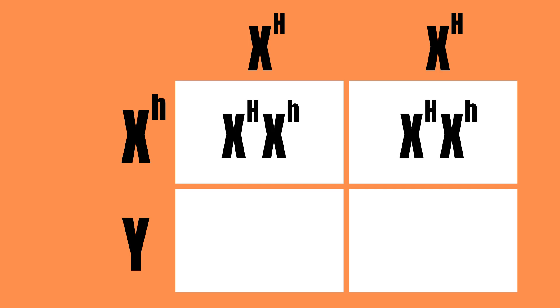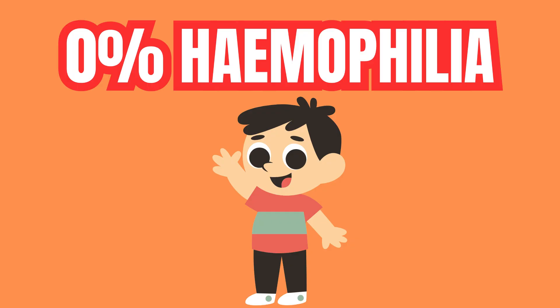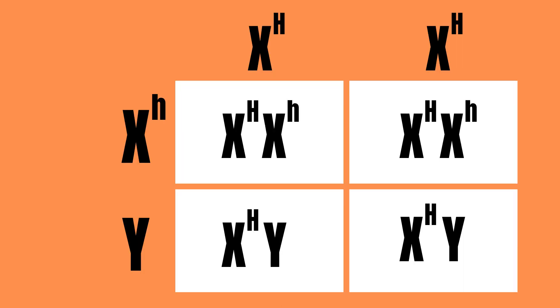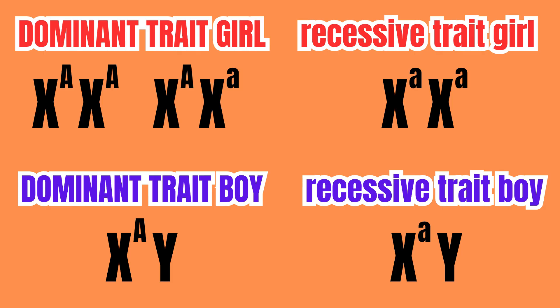Well, when we fill in the Punnett square, we find out that none of their children will have hemophilia. This just goes to show you how influential the alleles of the mom are in sex-linked traits — because she most often has two of these alleles, while the male usually only has one.